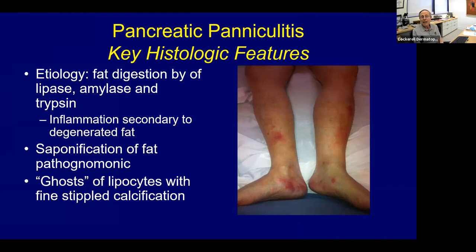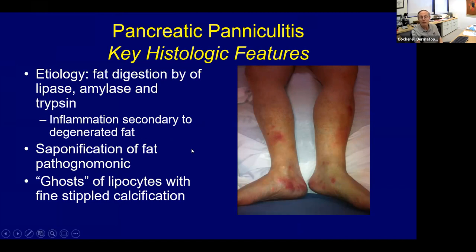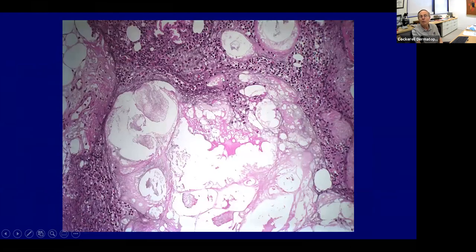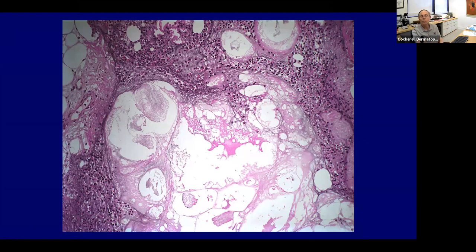Pancreatic paniculitis is not actually a true paniculitis but a metabolic disease where circulating abnormal amylase and lipase cause dissolution of fat — turning fat into soap, which becomes an inflammatory reaction secondary to degenerated fat. The saponification of fat is pathognomonic. You see ghosts of lipocytes with calcification. This process: lipase/amylase damages fat, causing secondary inflammation — that's how it develops.